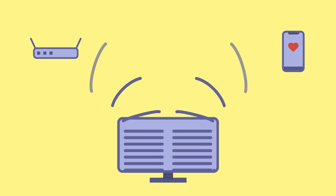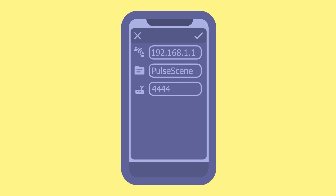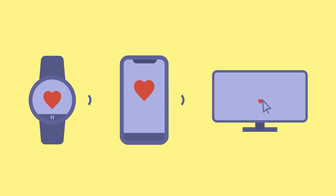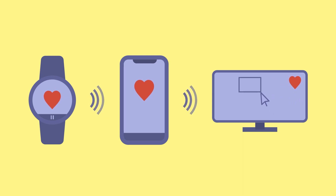Now, back on your smartphone, just click on Connect. Enter the IP address of your PC and the name of your OBS scene, which you can design as you like. If you have entered everything correctly, you are now connected to OBS Studio and should receive your heart rate.